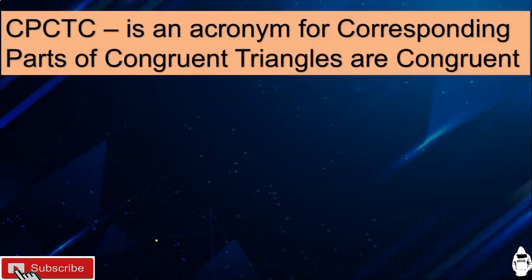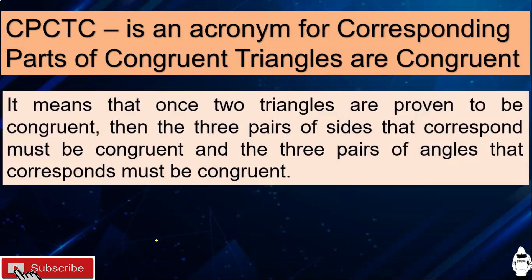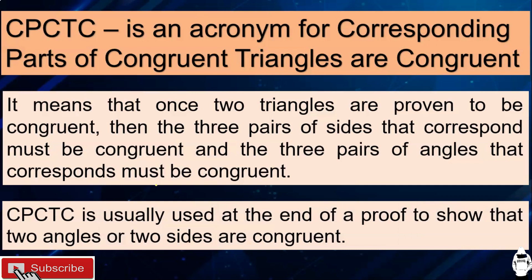Let's define first what CPCTC is. It's an acronym for Corresponding Parts of Congruent Triangles are Congruent. It means that once two triangles are proven to be congruent, then the three pairs of sides that correspond must be congruent, and the three pairs of angles that correspond must also be congruent. CPCTC is usually used at the end of a proof to show that two angles or two sides are congruent.